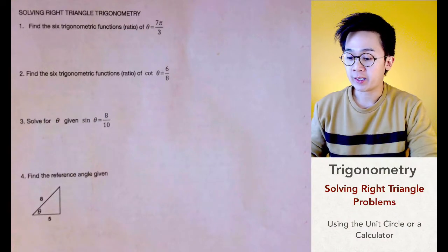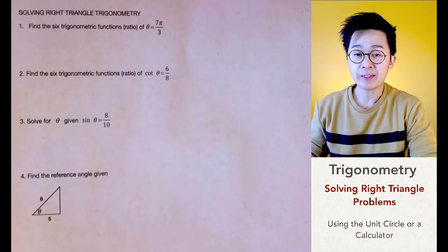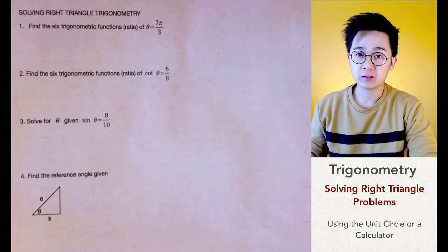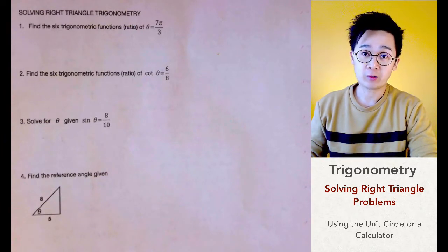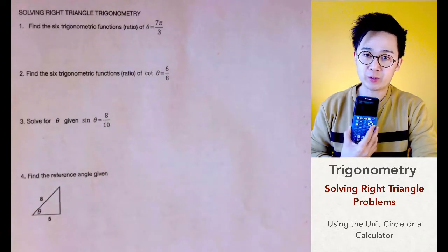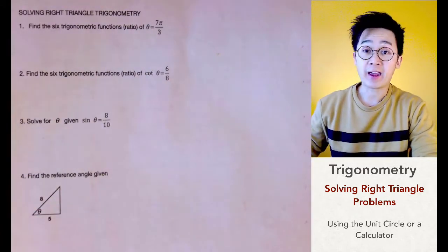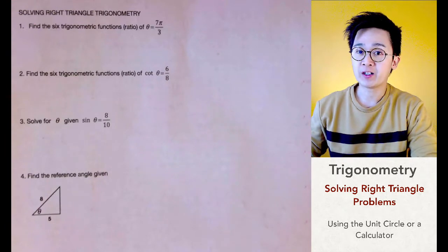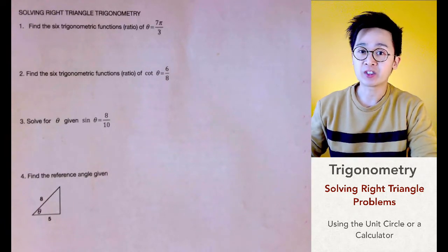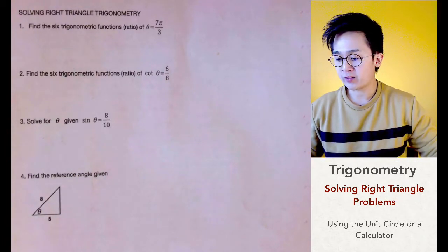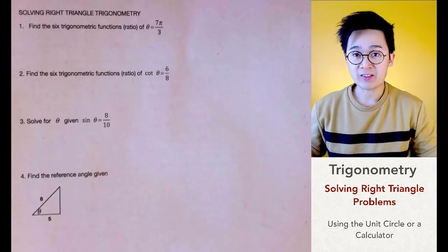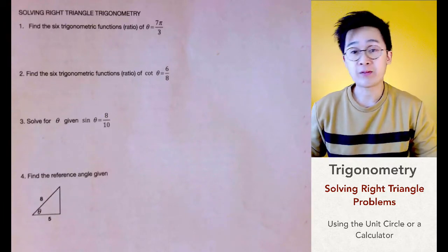Today we're going to be working on solving problems involving right triangle trigonometry. We're going to be using our unit circle for the values of the special angles, and sometimes we also need to use our calculator to find angles that are not considered special angles. We'll start with finding the six trig functions given that theta is seven pi over three.